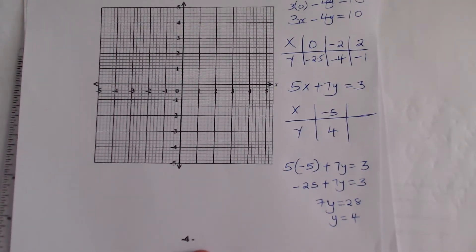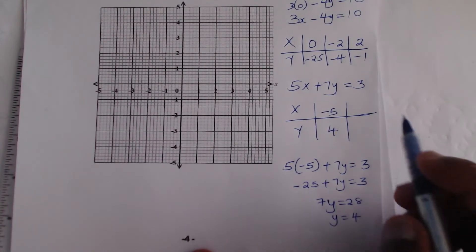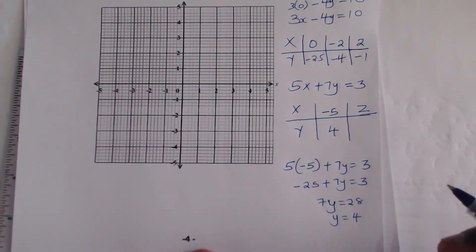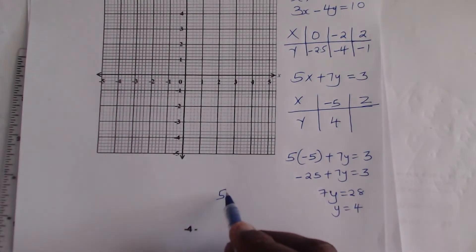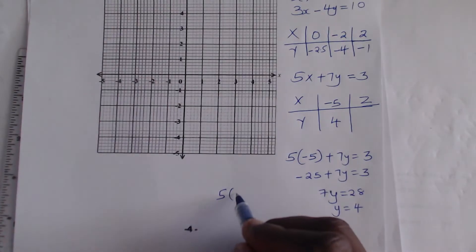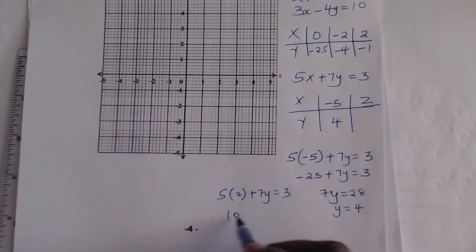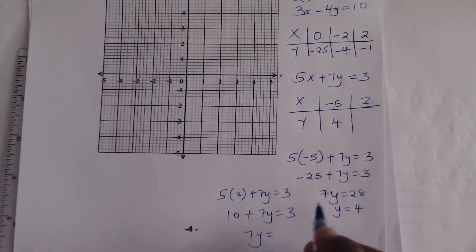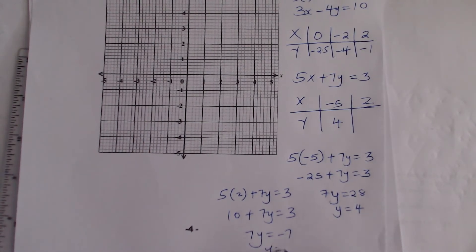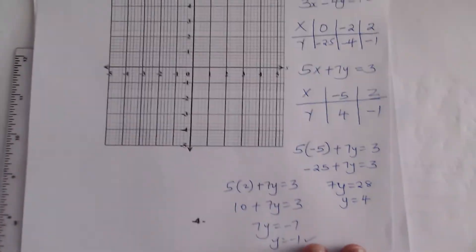You can still choose another point, let's say 2. When x is equals to 2, this will be 5 times 2 plus 7y equals 3, so 10 plus 7y equals 3. So 7y equals 3 minus 10, to give minus 7, so y is equals to negative 1. These are enough. You can now draw the lines.